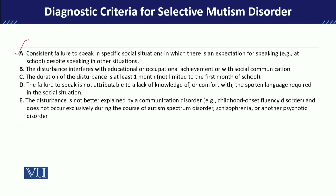Criteria A states that in specific social situations, the child is unable to speak — meaning there are certain situations where the child can speak, but not others. For example, the child is unable to answer the teacher. These specific social situations are where the symptoms will be observed.